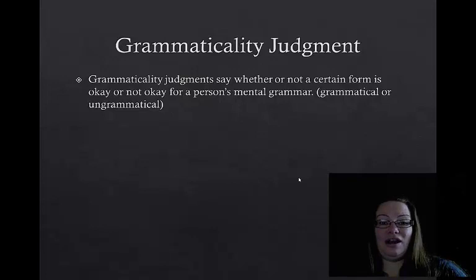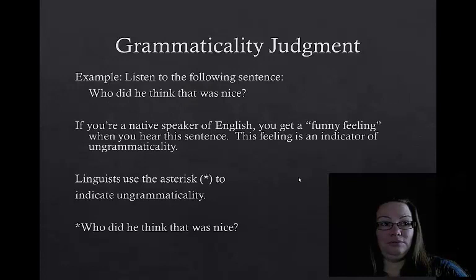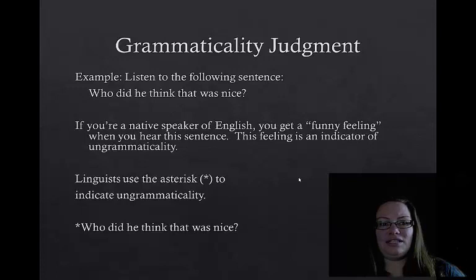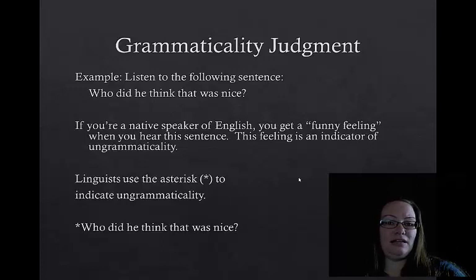A grammaticality judgment is when we say whether or not a form of a language is okay or not okay based on our mental grammar — we say it's either grammatical or ungrammatical. For example, the sentence 'Who did he think that was nice?' gives a native English speaker a funny feeling, which is an indicator of ungrammaticality. Linguists use an asterisk to indicate ungrammaticality.